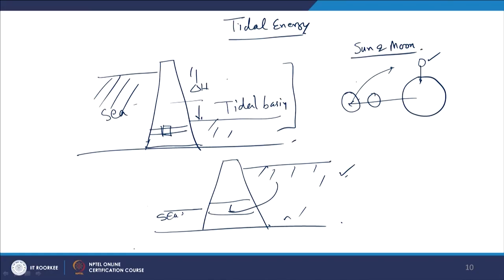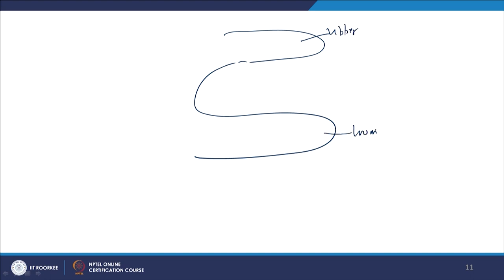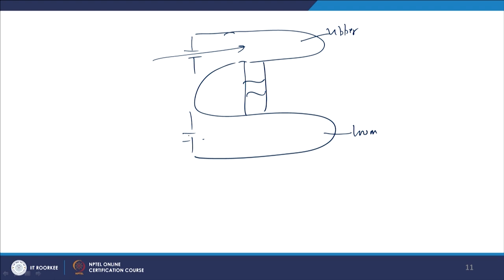This is a single-basin type system. There is also a two-basin system with an upper basin and a lower basin connected by sluice gates and turbines. The two-basin system provides relatively more uniform power because during high tide one basin fills with water, stabilizing generation on both sides.